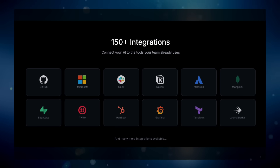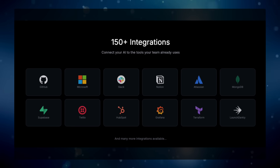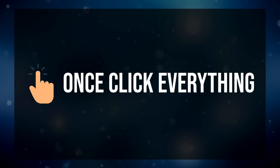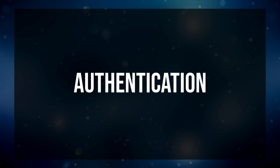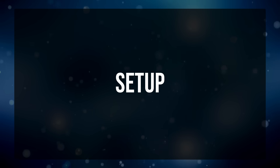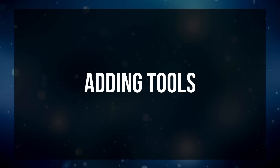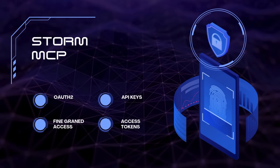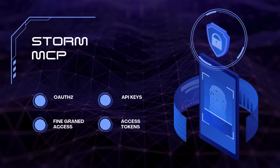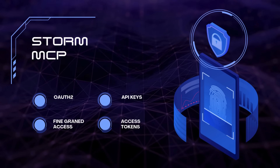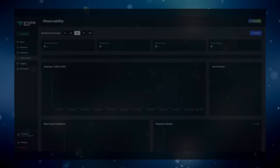GitHub, Slack, Notion, Airtable, Brave Search, CoinGecko — they're all ready to go. Second, one-click everything: one-click setup, one-click adding tools, one-click authentication. Storm handles OAuth2, API keys, fine-grained access tokens — all the complexity you normally deal with.